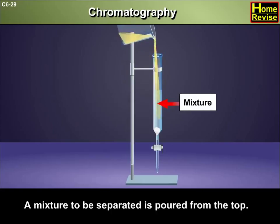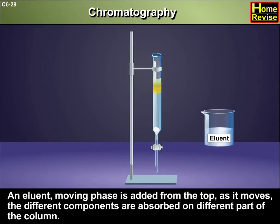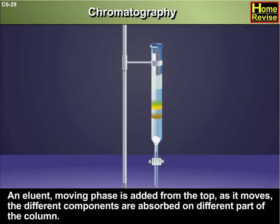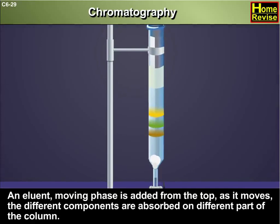A mixture to be separated is poured from the top. An eluent moving phase is added from the top; as it moves, the different components are adsorbed on different parts of the column.